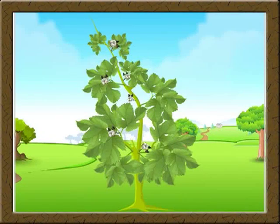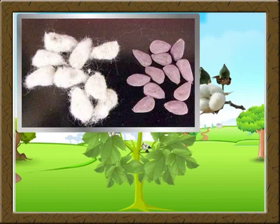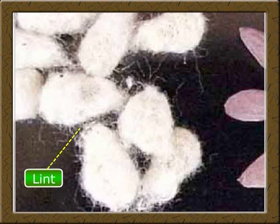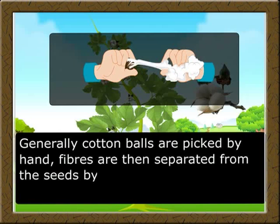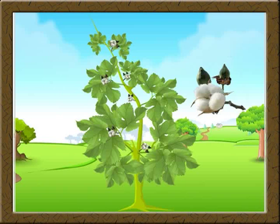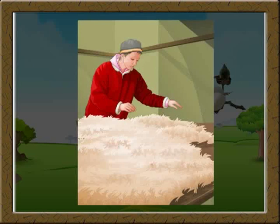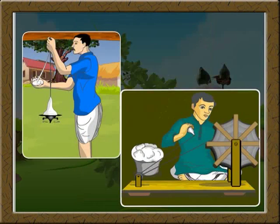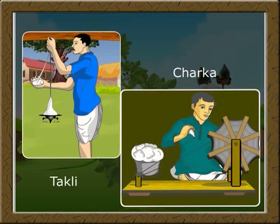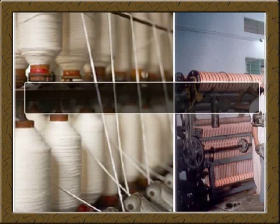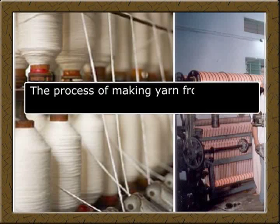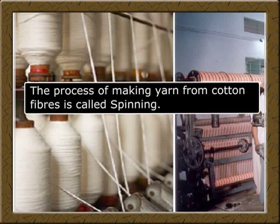Cotton is the best of the natural cloth. It is obtained from cotton balls. The long hair on each seed is called lint. Generally, cotton balls are picked by hand. Fibers are then separated from the seeds by combing in the mills. This process is called ginning of cotton. Clean cotton is drawn out and twisted to form yarn. Simple devices used for spinning in the houses are a hand spindle called takli and charka. But this process takes longer. The process of making yarn from cotton fibers is called spinning.